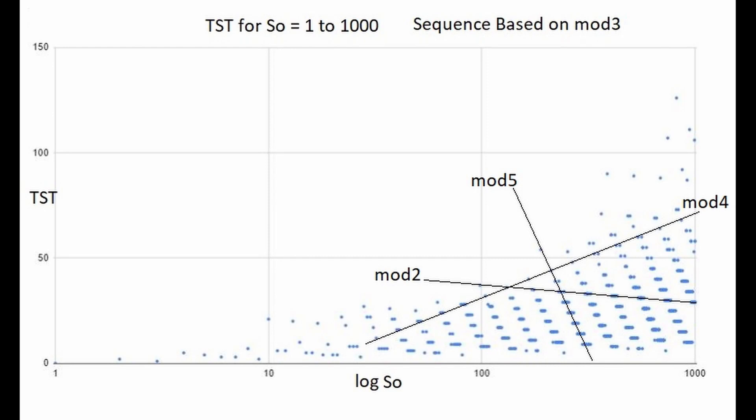The line corresponding to mod 2 values in this graph can also be found on the 3n plus 1 sequence for the log versus TST, but it is harder to see there.